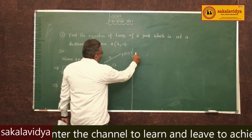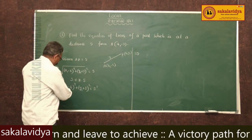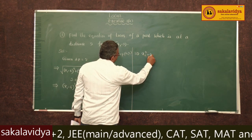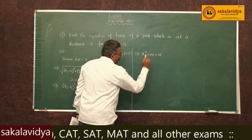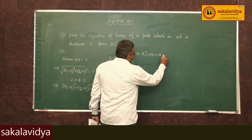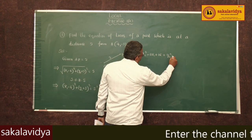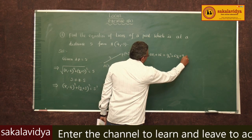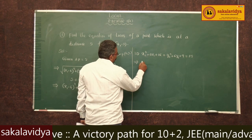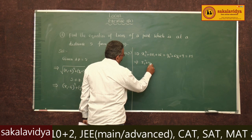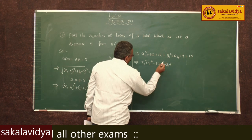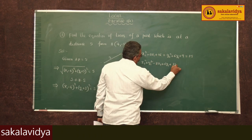This can be written as: (x1 minus 4) whole square expands to x1 square minus 8x1 plus 16. And (y1 plus 3) whole square expands to y1 square plus 6y1 plus 9, equals 25. So we write x1 square plus y1 square minus 8x1 plus 6y1, adding the numerical terms: 16 plus 9 equals 25.